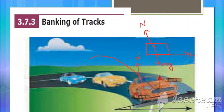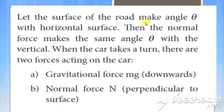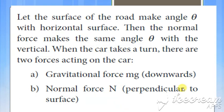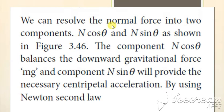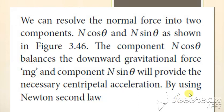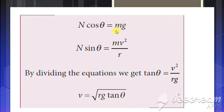Let us see how we are deriving this equation. First, let us consider the surface which makes angle theta with the horizontal. When the car turns, there are two forces: gravitational force and the normal force. This normal force N is split into two components — N cos theta and N sin theta. N cos theta is balanced by mg, and N sin theta provides the centripetal acceleration. So N cos theta equals mg, and N sin theta equals the centripetal force, which is mv squared by r.